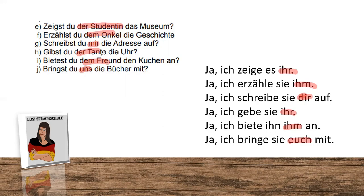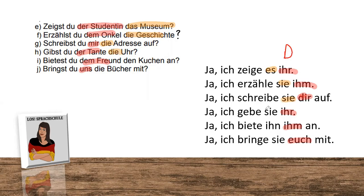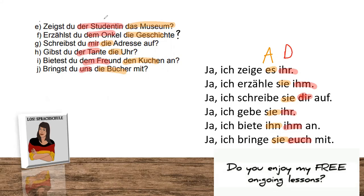Let's check out the accusative and dative parts. The dative part is in red: 'der Studentin' → 'ihr', 'dem Onkel' → 'ihm', 'mir' → 'dir', 'der Tante' → 'ihr', 'dem Freund' → 'ihm', 'uns' → 'euch'. This is all dativ — we substituted the person into the personal pronoun. Same with the accusative: 'das Museum' → 'es', 'die Geschichte' → 'sie', 'die Adresse' → 'sie', 'die Uhr' → 'sie', 'den Kuchen' → 'ihn', 'die Bücher' (plural) → 'sie'.